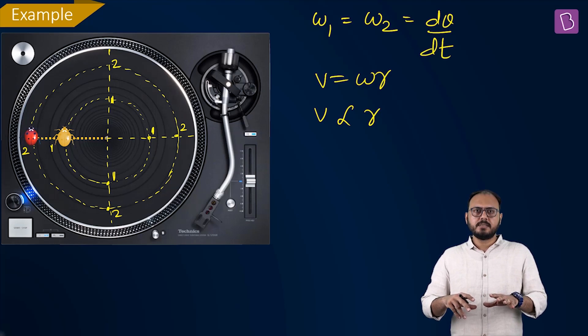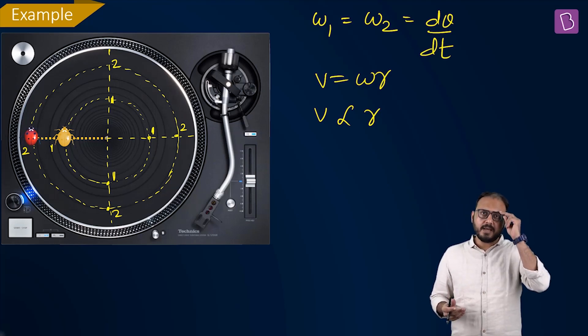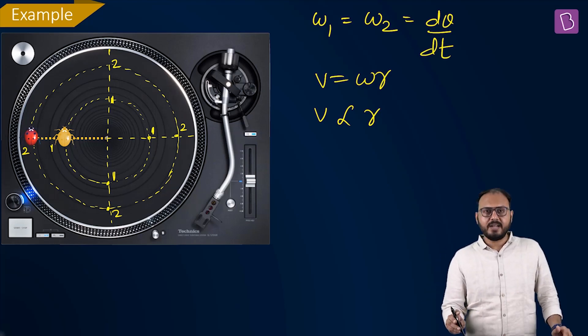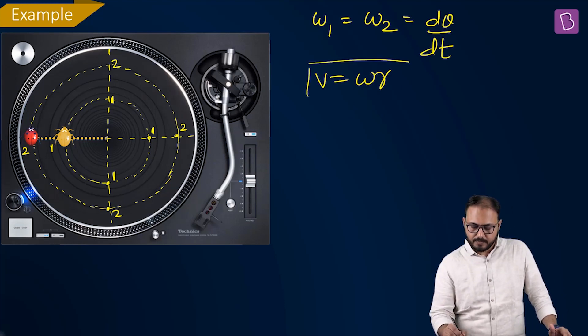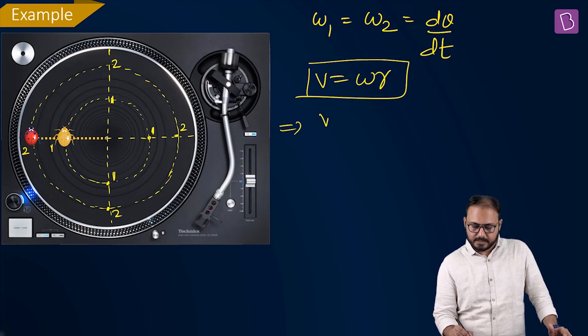Bigger track means more distance, 2πr. So here, ω₁ is equal to ω₂ and v is equal to ω r. Perfect. We know this.